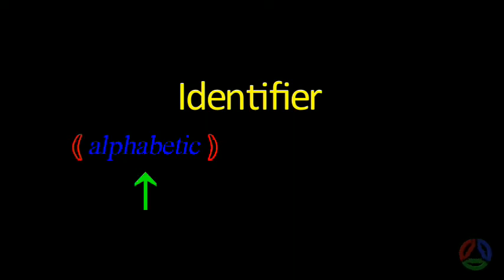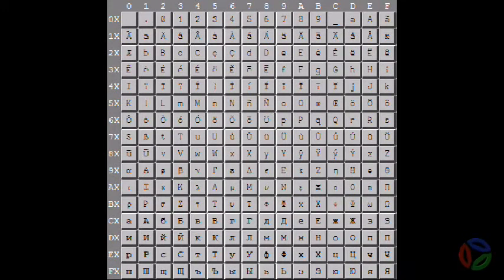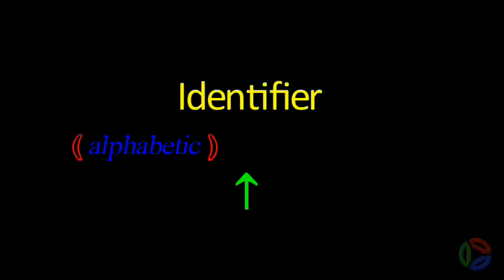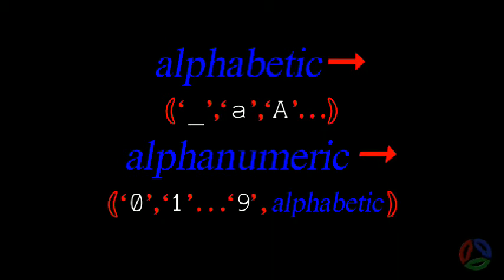An item's identifier or name always begins with an alphabetic character. This must be drawn from the official subset of 254 Unicode characters used for names in Phi. These include upper and lower case alphabetics as well as the underscore. The Phi language is case sensitive as in C. Following the mandatory leading alphabetic character, zero or more alphanumeric characters may follow, belonging to a superset of the aforementioned simple set augmented by the 10 numerical characters 0 through 9.